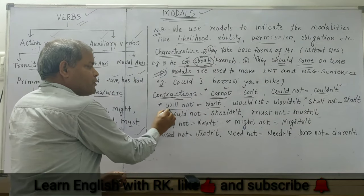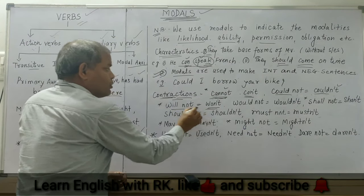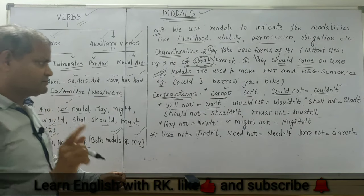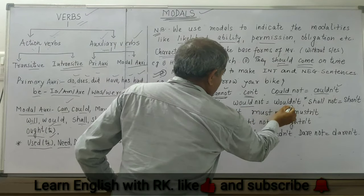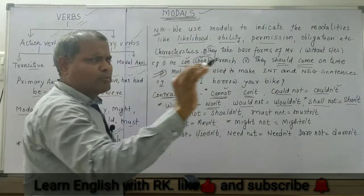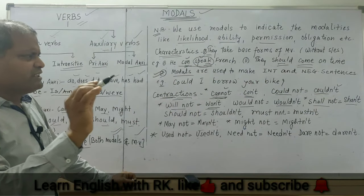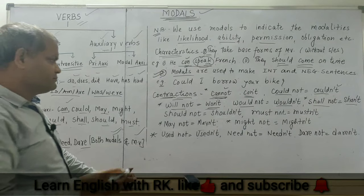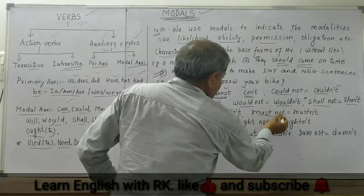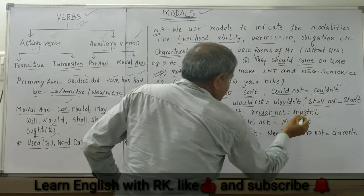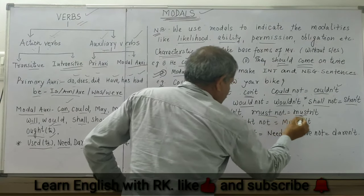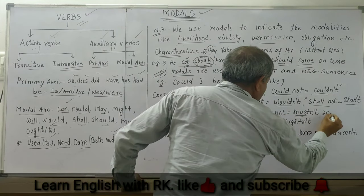See, the short form of 'will not' is 'won't' — never use 'willn't'. Generally we make mistakes here. 'Would not' — 'wouldn't'. 'Should not' — 'shouldn't'. But this form is very formal; we rarely use 'shan't' in spoken English — that does not sound good. 'Must not' — 'mustn't'. Never say 'mustn't' incorrectly — the pronunciation is 'mustn't'.